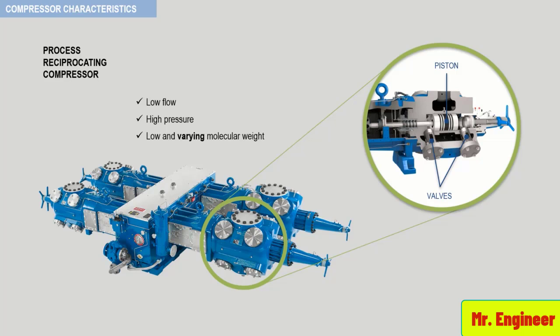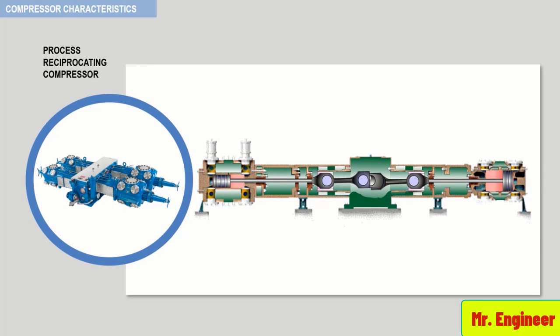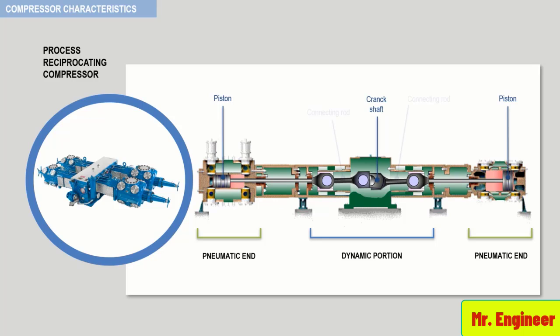Now take a look at the simplified cut section. Any reciprocating compressor is made of two parts: the pneumatic ends and the dynamic portion. The compression of the gas is carried out in the pneumatic end where the piston acts on the gas. The dynamic portion is responsible for transmitting the mechanical motion to the piston. It includes the crankshaft, the connecting rod, and the crosshead.